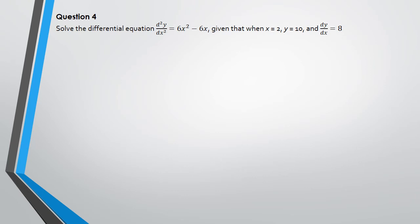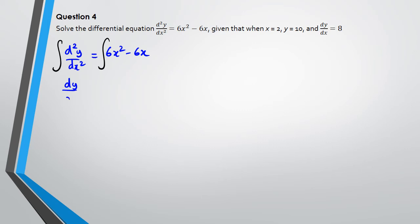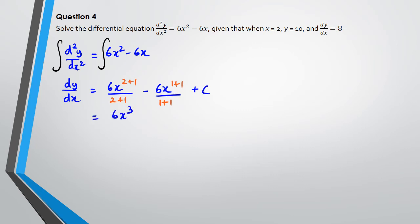For the final question, we have d²y/dx² = 6x² − 6x. Integrating once gives dy/dx. Integrating 6x² gives 6x³/3, and integrating 6x gives 6x²/2, plus c. So dy/dx = 2x³ − 3x² + c.